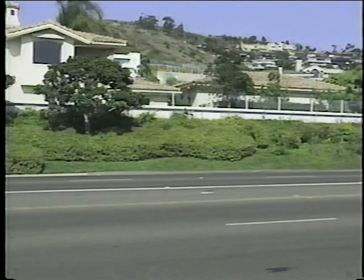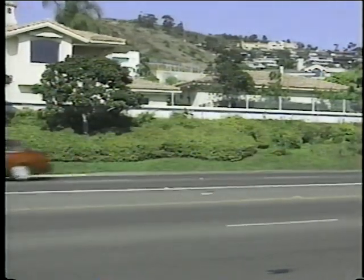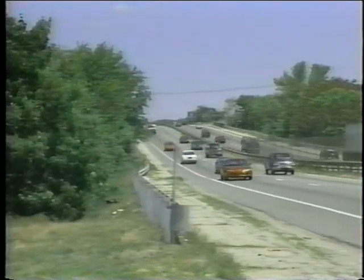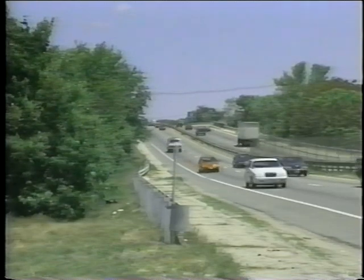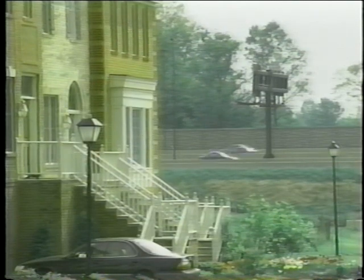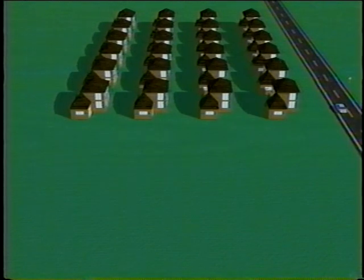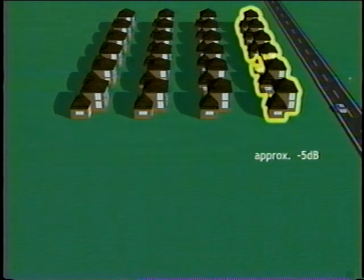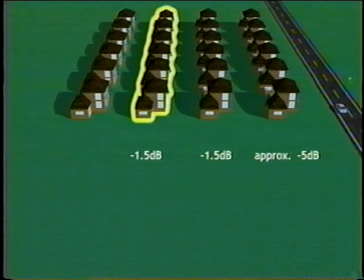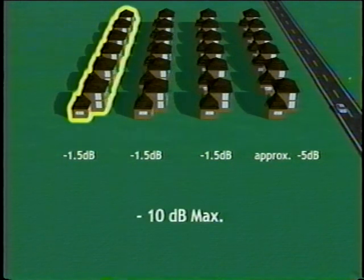Besides obstructions specifically constructed for noise abatement, other large objects can interfere with sound propagation. We are referring here to rows of buildings or large areas of dense foliage. Buildings refer to houses, offices, apartments, and other similar structures. For rows of buildings, the amount of noise reduction varies with building sizes, their spacing, and site geometry. Typically, 4.5 to 5 dB attenuation is attainable for the first row of buildings, and an additional 1.5 dB for each subsequent row, up to a maximum of about 10 dB.